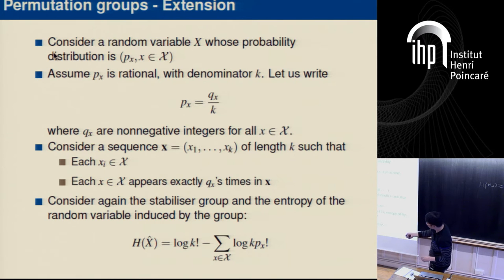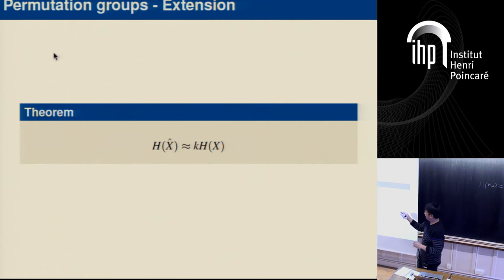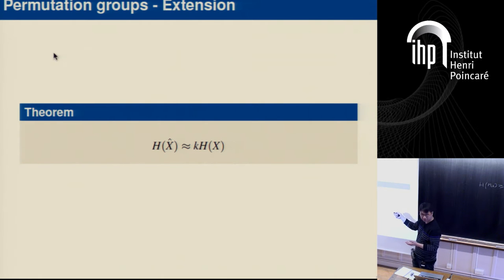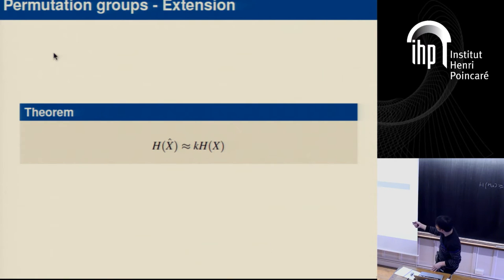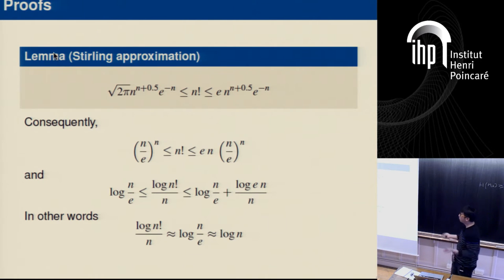The main result to keep in mind is: the entropy of the group-induced random variable H-hat(X) is approximately k times H(X), the entropy of the original random variable. The only difference is the scalar factor k.